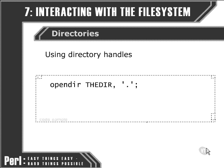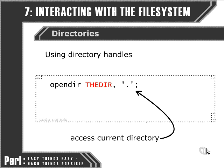The syntax is very similar to the syntax for opening a file. The function name is different, but the directory handle uses a very similar syntax to a file handle. It's always written in all capitals and included as the first argument of the opendir function. The second argument is the directory we want to access — in this case, dot stands for the current directory.